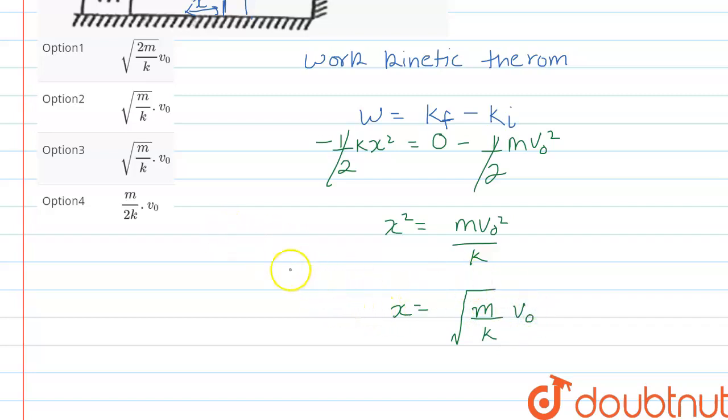So which option will be the correct option? Option 2 is the correct option: under root of m upon k into v naught. Thank you for watching.